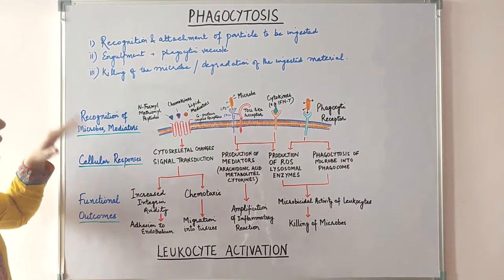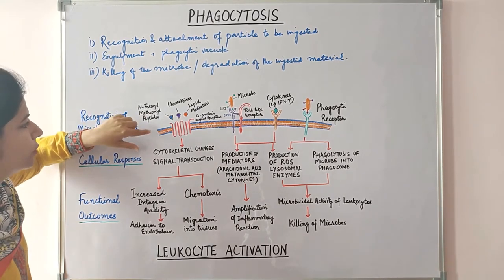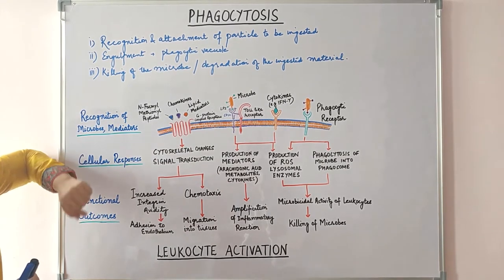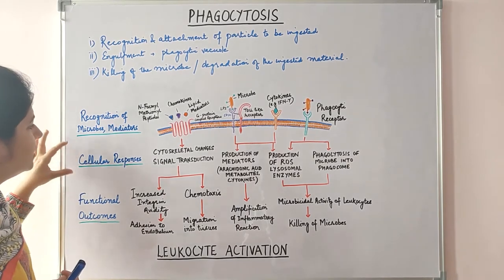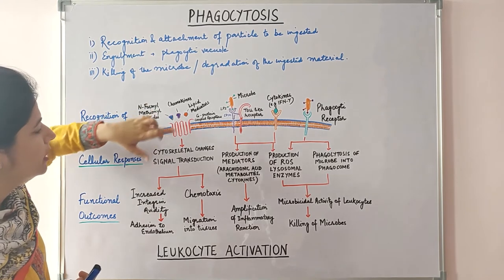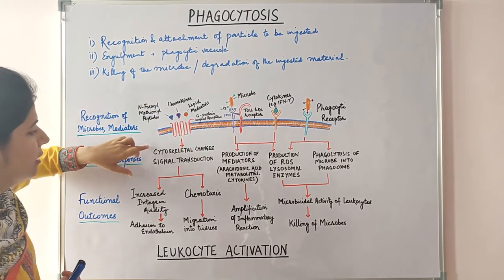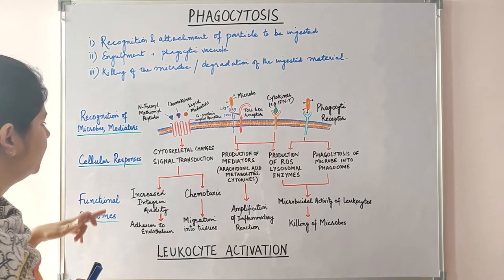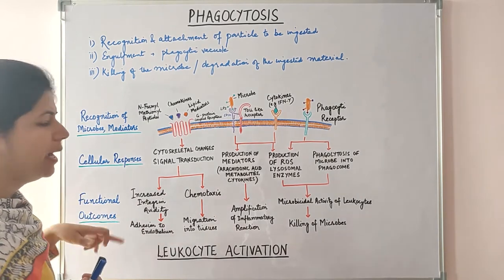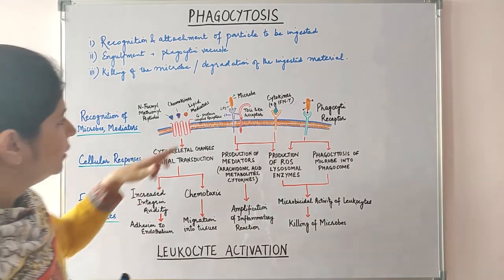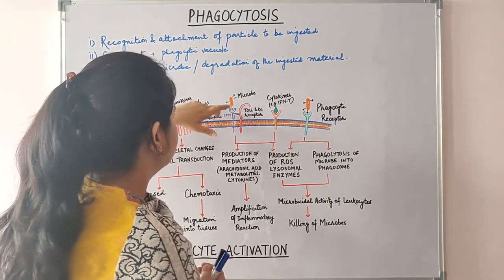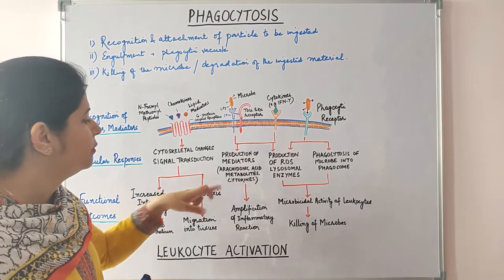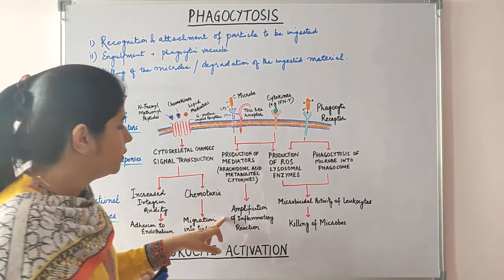The recognition and attachment of microbe, or the attachment of chemoattractants to the leukocyte, induces certain responses collectively called leukocyte activation. When chemoattractants bind to the G protein-coupled receptor, there are cytoskeletal changes leading to chemotaxis and migration of leukocytes into the tissue. These also lead to increased integrin avidity and adhesion to endothelium. Toll-like receptors engaged by the microbe lead to production of chemical mediators, arachidonic acid metabolites, and cytokines, which amplify the process of inflammation.